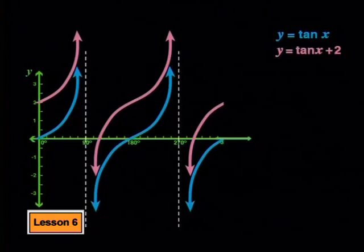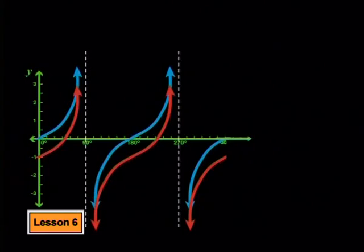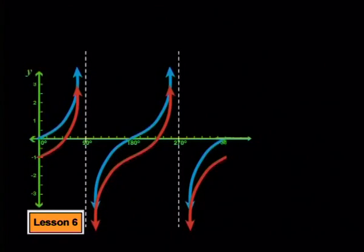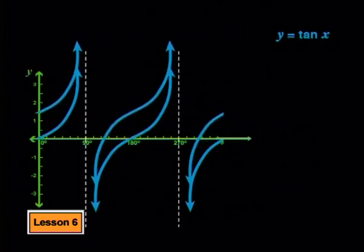You've seen this shift in the sine and cosine graphs before, so you'll know the formula of the pink graph is y equals tan x plus 2. The points on the red graph have shifted down by 1 unit from the parent graph, so its formula is y equals tan x minus 1. The q value in the tan function has the same effect as on all other functions — the parent graph is shifted up or down by q units.